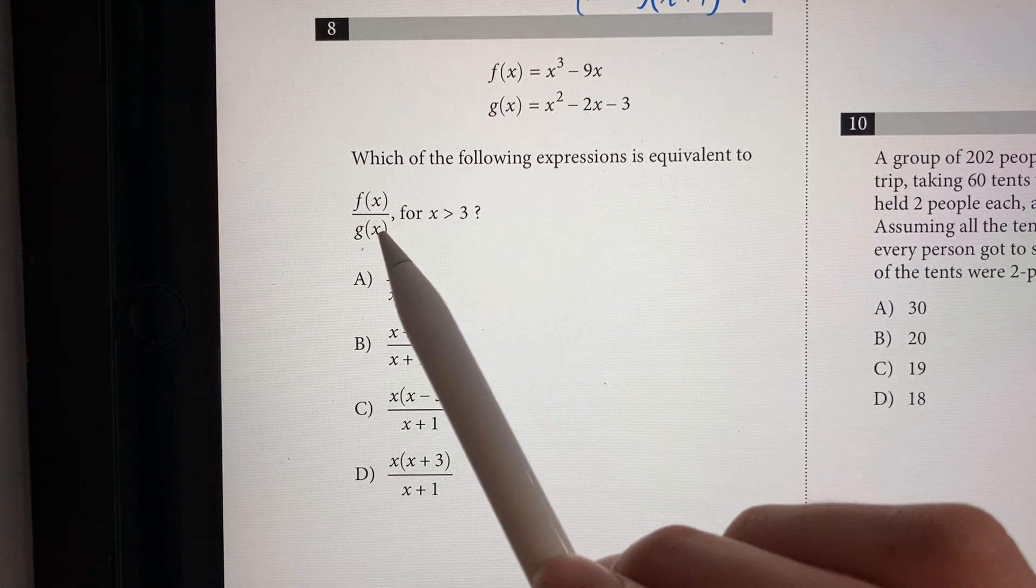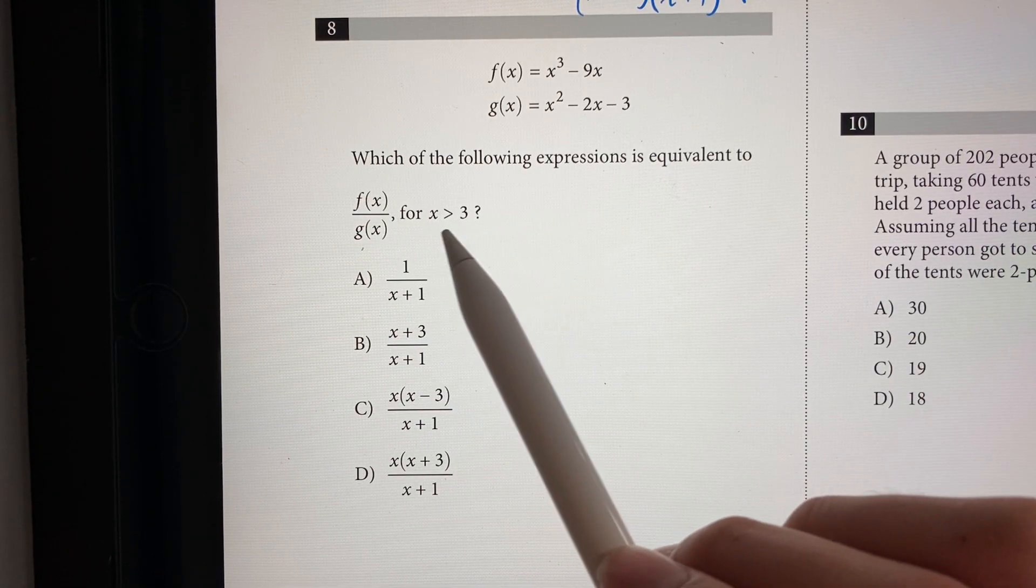Which of the following expressions is equivalent to f of x over g of x for x is greater than 3?